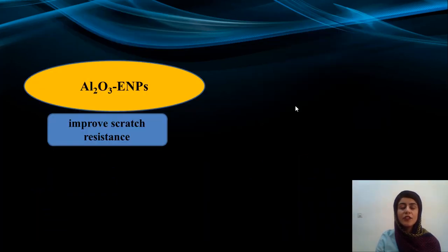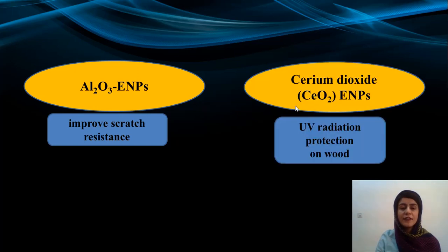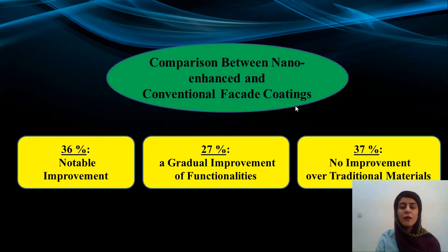Aluminum oxide engineered nanoparticles are used to improve scratch resistance. Aluminum dioxide engineered nanoparticles are used to produce UV radiation protection on wood.